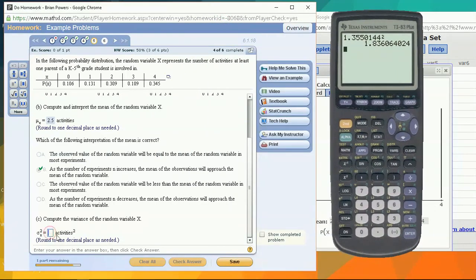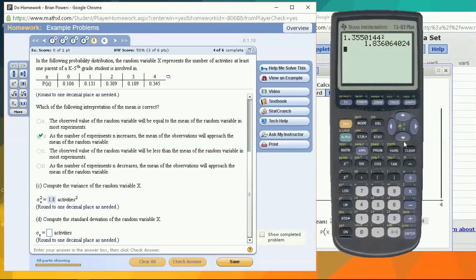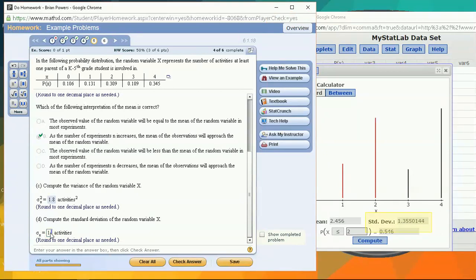Sigma squared is a variance. 1.83, oh, it only wants one decimal place, 1.8. Standard deviation is given to me directly, so I can type that in. One decimal place is 1.4. I have to round it up. Beautiful.